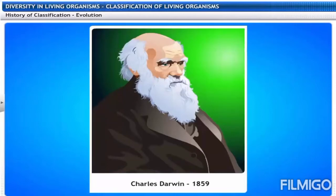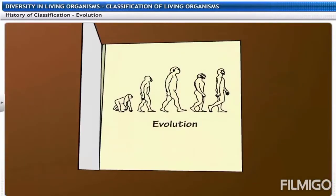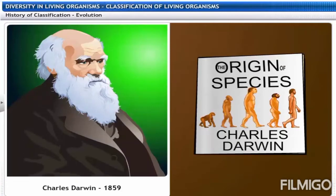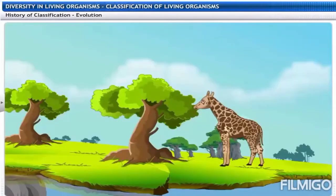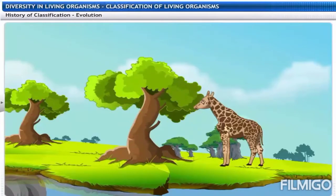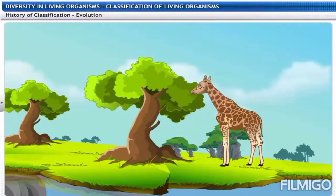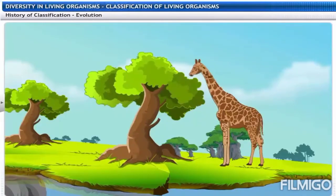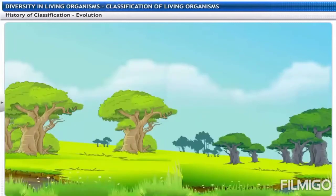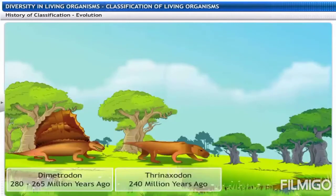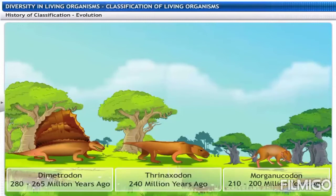It was Charles Darwin who put forward the idea of evolution in 1859. He noted this in his famous book, The Origin of Species. Most life forms that we see today have evolved to survive better conditions. Hence, the classification of life forms is closely related to evolution.